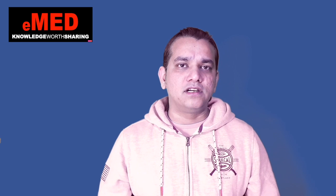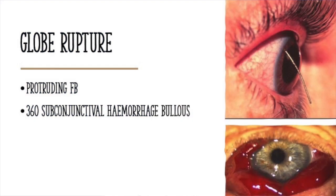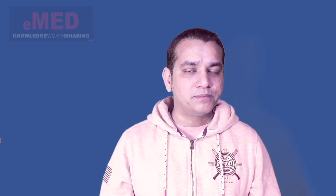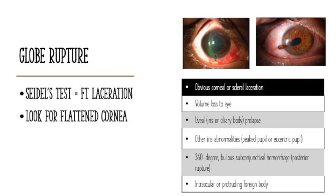How do we diagnose a globe rupture? It may be obvious when you see a sunken eye with volume loss, but at times we must pick up globe rupture based on indirect evidence. You might see an obvious corneal laceration — and I'm talking about laceration, not corneal abrasions. How do you diagnose a corneal laceration? By something called Seidel's test: you place fluorescein dye in the eye, and if it seeps through into the anterior chamber, that is diagnostic of a corneal laceration.